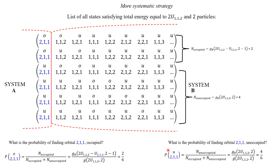Likewise, we could ask what is the probability of finding orbital 211 unoccupied? This probability is the number of states where it is unoccupied — so now in the numerator we are using the multiplicity evaluated at the total energy and total number of particles, which is 4 divided by 6. Notice that here again the denominator is the multiplicity of the total system.